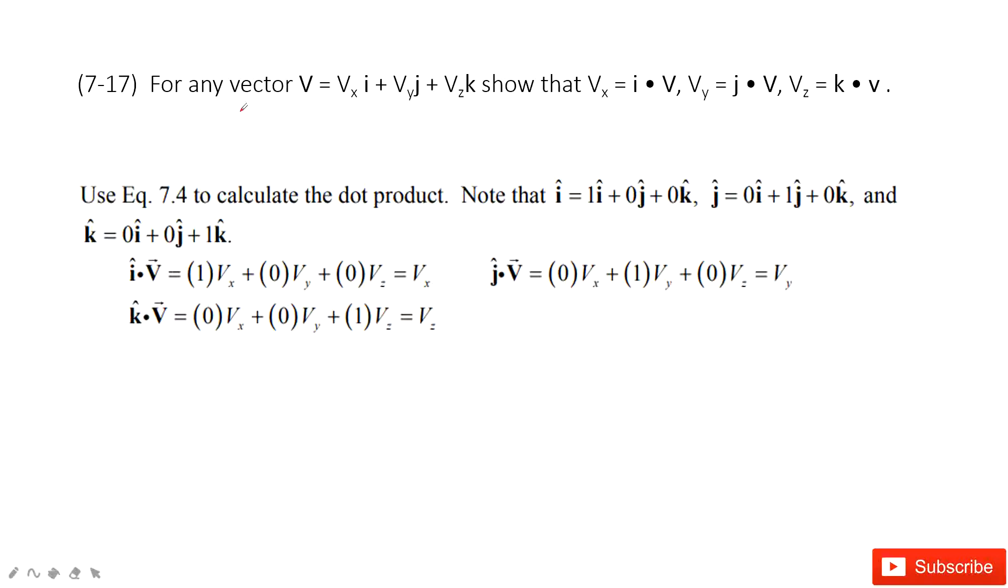As for problem 17, we talk about the dot product for the vectors. You can see we have a vector, the given vector is v. It has three components: x, y, z.